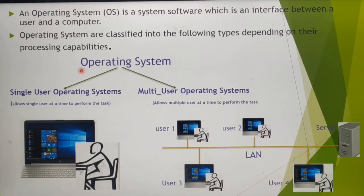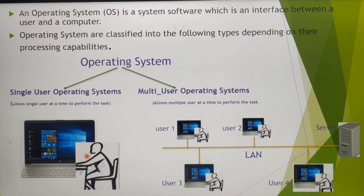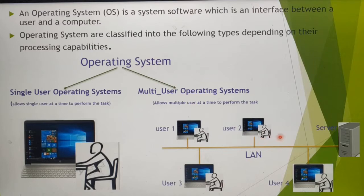There are two different types of operating system. The first one is single user operating system and the second one is multi user operating system. Single user operating system allows a single user only at a time to perform the task, but multi user operating system allows multiple users at a time to perform the task.